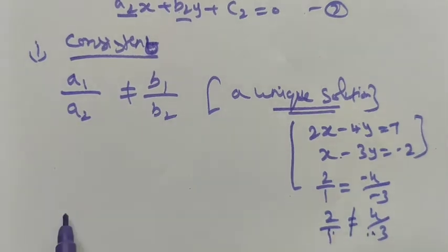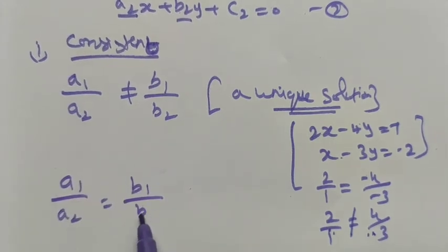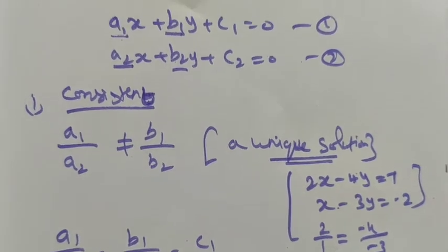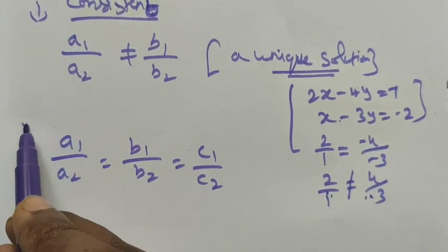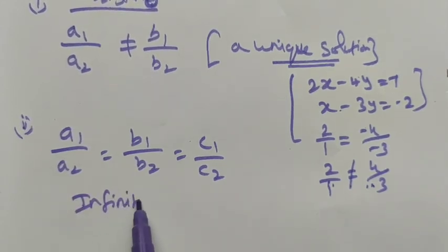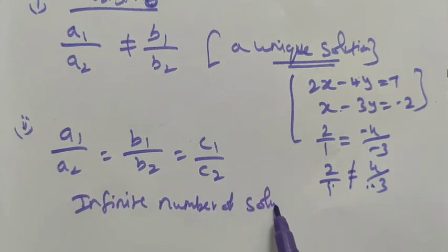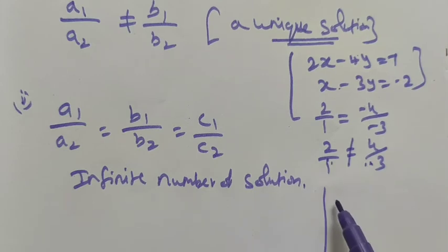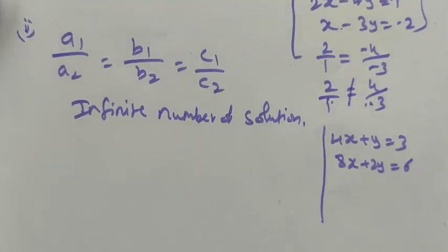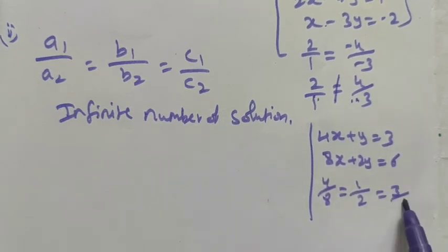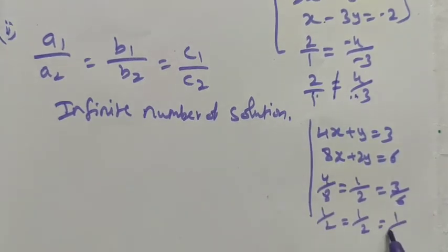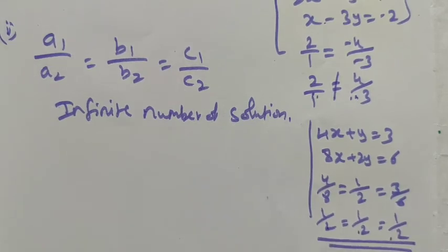For the second consistent condition, if a1/a2 = b1/b2 = c1/c2 — meaning the ratio of the coefficient of x equals the ratio of the coefficient of y equals the ratio of the constant terms — then we have an infinite number of solutions. For example: 4x + y = 3 and 8x + 2y = 6. The ratios are 4/8 = 1/2, 1/2 = 1/2, and 3/6 = 1/2. All ratios are equal, so we get an infinite number of solutions.